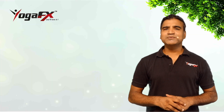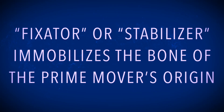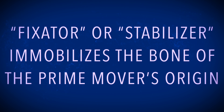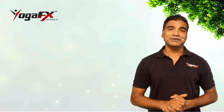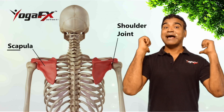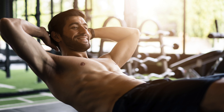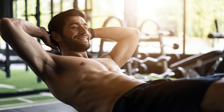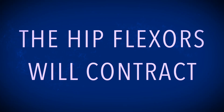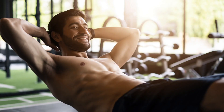Stabilizers. A synergist is more specifically referred to as a fixator or stabilizer when it immobilizes the bone of the prime mover's origin, thus providing a stable base for the action of the prime mover. The muscles that stabilize or fix the scapulae during movement of the upper limb are good examples. In the sit-up exercise, the abdominal muscles attach to both the ribcage and the pelvis. When they contract to enable a sit-up, the hip flexors contract synergistically as fixators to prevent the pelvis from tilting, thereby enabling the upper body to curl forward as the pelvis remains stationary.